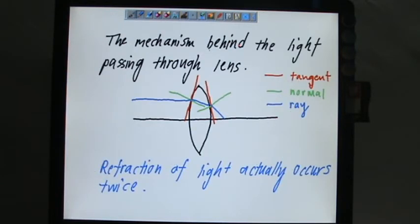The mechanism behind the light passing through lens - we can use a more detailed version. Look at this red line. This red line represents the tangent at the point where the blue light ray is striking. The blue light ray is striking at this point so I draw a tangent line in red and also draw a normal line which is green. You realize that this point seems like what we have learned before. Here is the incident ray and this is the refracted ray, refracted angle.